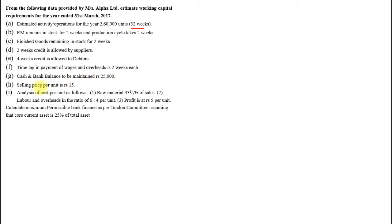Cash and bank balance to be maintained is 25,000. Selling price is 15 rupees per unit. The analysis of cost is: raw material is 33 and one-third percent of sales; labor and overheads are in the ratio six to four; profit is 5 rupees per unit. Also calculate the maximum permissible bank finance as per the Tandon Committee, assuming the core current asset is 25 percent of total current assets.